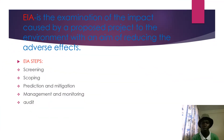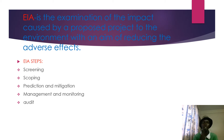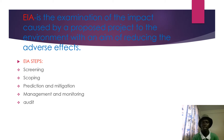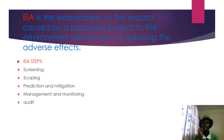We'll begin with the definition of environmental impact assessment. EIA is a process — an examination of the impact caused by a proposed project or plan to the environment — with an aim of reducing the adverse impacts or adverse effects associated with that project. The main aim of EIA is to reduce the environmental effects so that the environment is kept in its natural position.